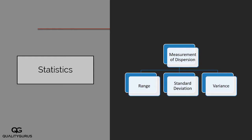So, when you talk about measurement of dispersion or measurement of variation, there are three commonly used measurements. One is the range, which is quite simple. The second is standard deviation, and the third is variance. Let's start with the simple one — the range — in the next video.